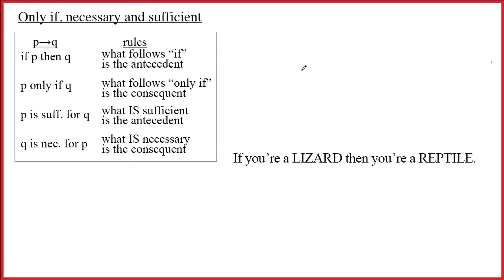We have symbolized a lot of conditionals so far. That is, we've symbolized sentences of the form if something, then something else. When we do it, we generally write sentences of the form if P, then Q, or P arrow Q.